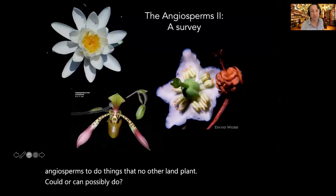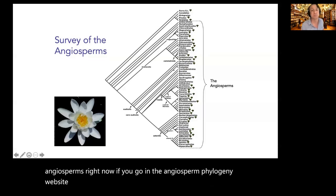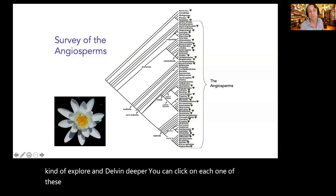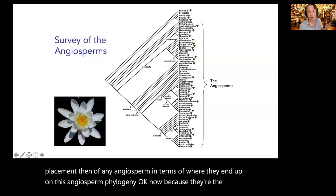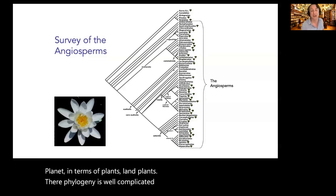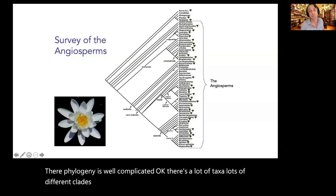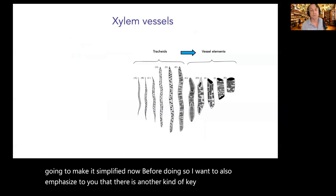Let's do an overview of the angiosperms. If you go to the angiosperm phylogeny website housed at the Missouri Botanical Garden, you can explore in more detail and click on each taxon. Because they are the most speciose group of land plants on the planet, their phylogeny is complicated — a lot of taxa, clades, grades, and subgroupings. We're going to simplify that complicated phylogeny.